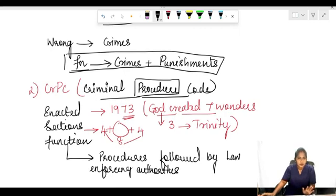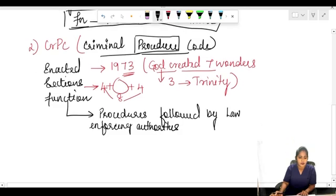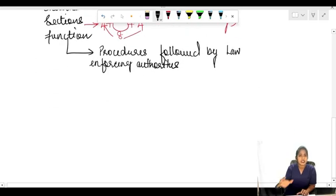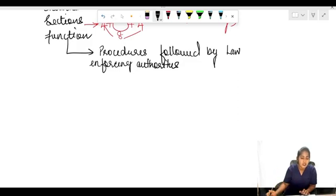So a crime has happened, we know what punishment we are going to get. But there should be a procedure, right? Once a crime happens, all these police people or any law enforcing people will come into place. How will it happen or proceed? Those procedures have been dealt under this Criminal Procedure Code.